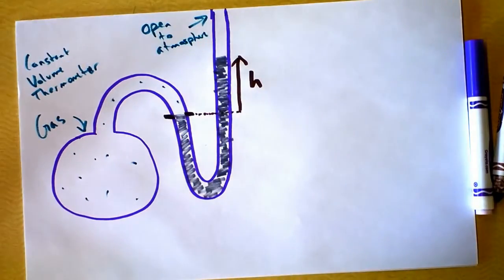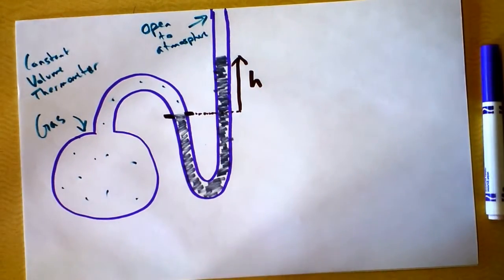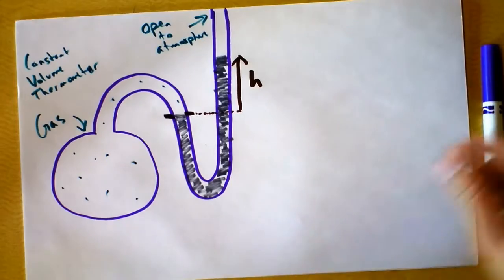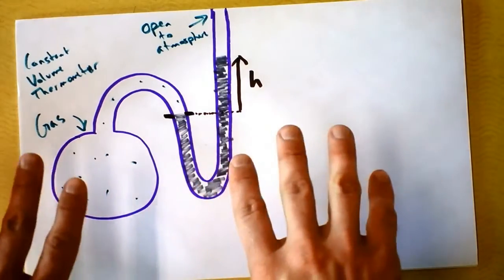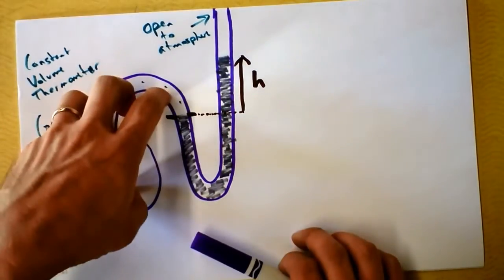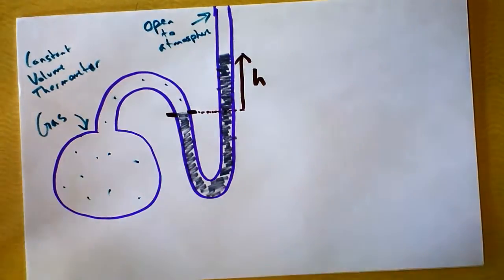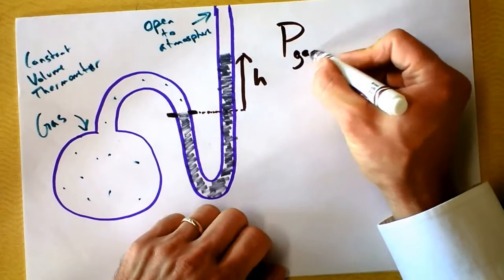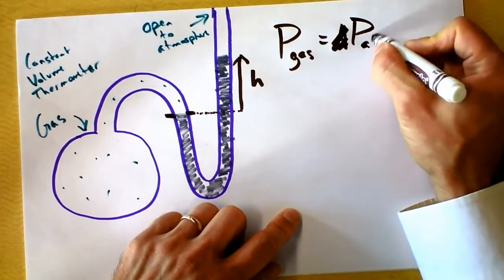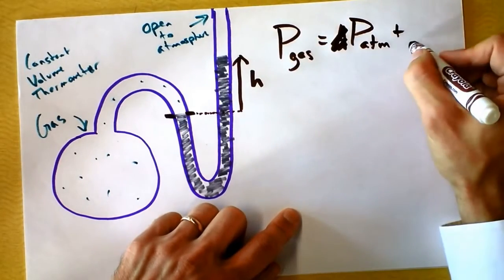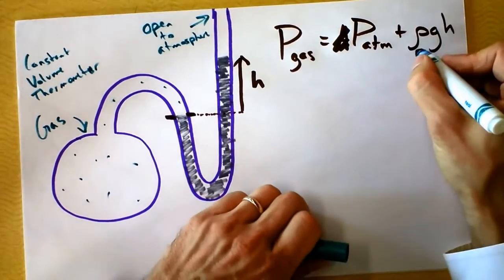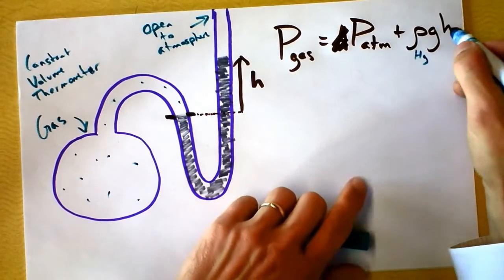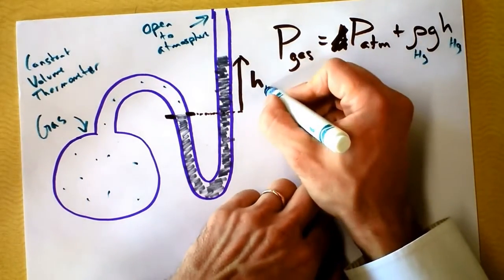The constant volume thermometer is fantastically useful, and these devices were devised in the early 1700s. A researcher around 1702 first theorized that something very interesting was happening with gases. He put a lump of air in the sphere and measured the mercury height H. The pressure of the gas equals atmospheric pressure plus rho of mercury times g times H of mercury — that's the height of mercury in the tube.